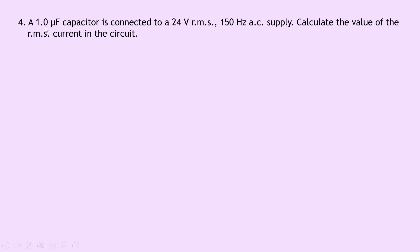Lastly, question 4 says that a 1.0 microfarad capacitor is connected to a 24 volt RMS 150 hertz AC supply. Calculate the value of the RMS current in the circuit. Well, we're given the RMS voltage and we're asked to find the RMS current, but we cannot find the RMS current until we know what the capacitive reactance XC is.